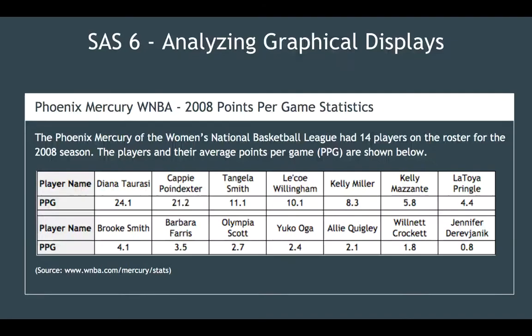Today's lesson is the sixth lesson in the unit on statistical studies, unit three. It's called analyzing graphical displays, and we're going to look at different types of graphical displays. We looked at one specifically yesterday — histograms, which are generally used to describe univariate data. We may also do a lab in class looking at different types of graphical displays. Let's look at this table we have here.